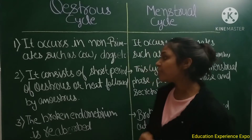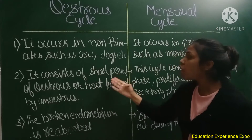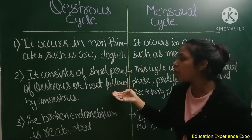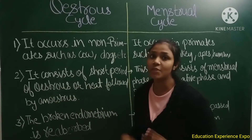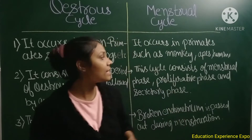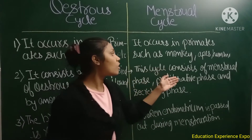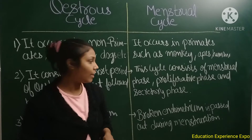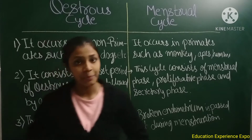In the estrus cycle, it consists of a short period of estrus or heat followed by the anestrus phase. Whereas in the menstrual cycle, it consists of the menstrual phase, proliferative phase, and secretory phase.